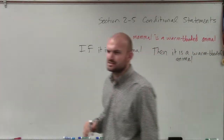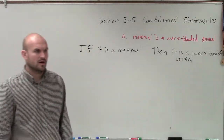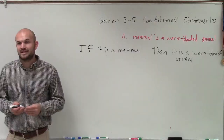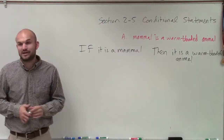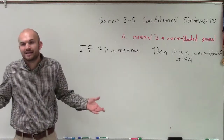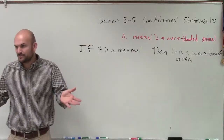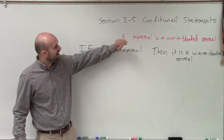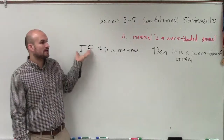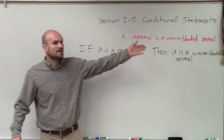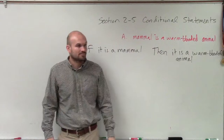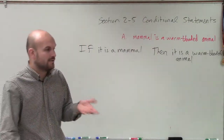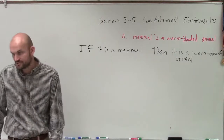That kind of makes sense, conditionally. I did make something up, but I didn't say 'a mammal is a warm-blooded animal that has hair on it' — I didn't add something random into it. I just converted it into conditional form. A mammal is a warm-blooded animal, so therefore if we know we have a mammal, then we know it is going to be a warm-blooded animal — statements that we can now evaluate as either true or false.